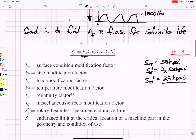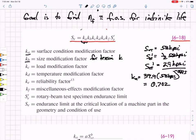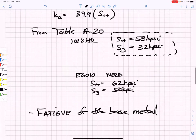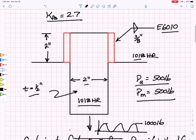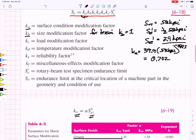Now I'm going to calculate the KA, 39.9 times 58 kpsi raised to the minus 0.995 power. That gives me a KA of 0.702. The geometric size modification factor, when we load in tension, KB is equal to 1. That's what we're doing in this particular example. We are taking a strip of material and we are loading it in repeated tensile loading. So our KB is equal to 1.